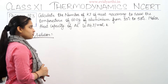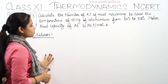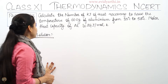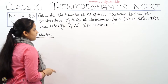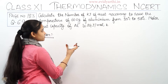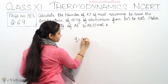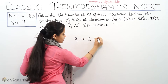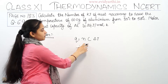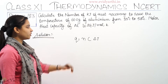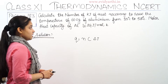The question: calculate the number of kJ of heat necessary to raise the temperature of 60 grams of aluminium from 35 degrees Celsius to 55 degrees Celsius. The molar heat capacity of aluminium is 24 joule per mole per Kelvin. The equation applicable to this question requires heat energy, so Q is equal to N times C times delta T. We are provided with the delta T value and the heat capacity value, and now our job is to calculate the number of moles of aluminium.